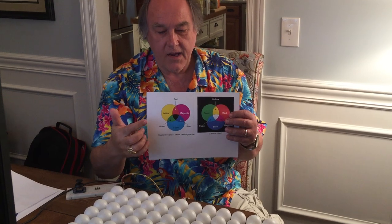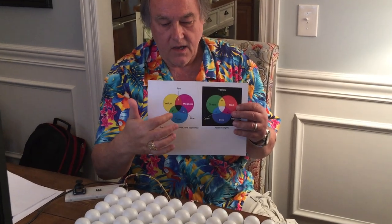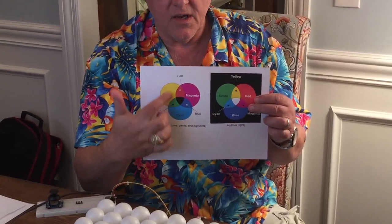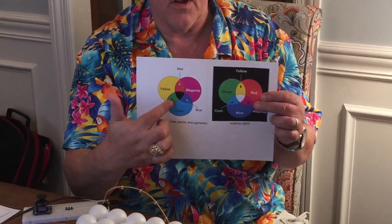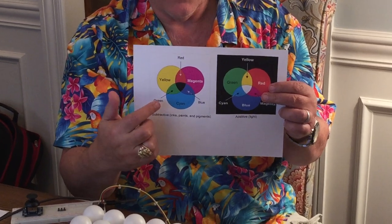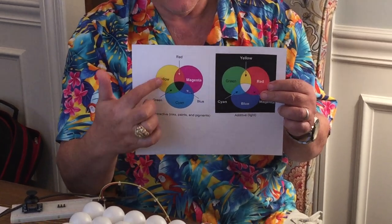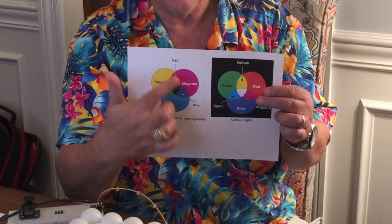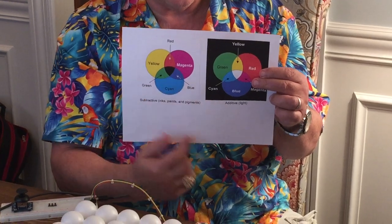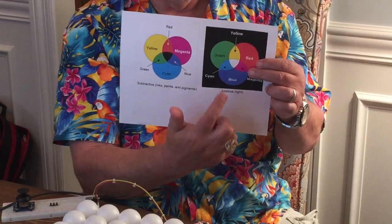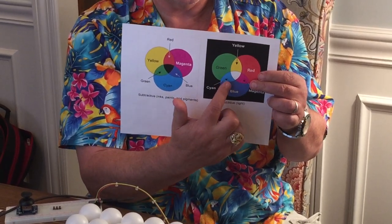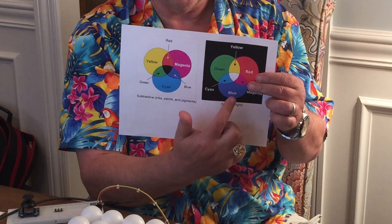If we had pigments or inks we'd be using a subtractive colour scheme — subtractive primaries — where every time we add a colour that takes something more away, and when we add all the colours we get black. We're using light, so we're using additive primaries.